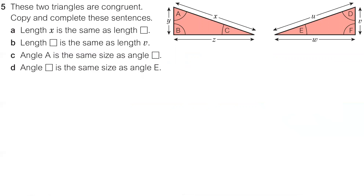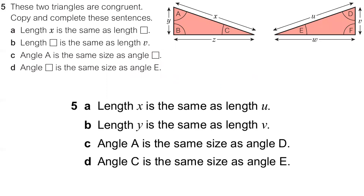Question five. We are told straight away that these triangles are congruent, so we know that certain lengths and angles would correspond — they'd be the same size or length. Copy and complete the sentences in full in your book. We can see X and U would be the same sides — this diagonal side matched. This vertical side Y looks a lot like V, Z fits with W, and then we can match our angles A with D, B with F, and C with E.